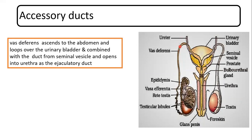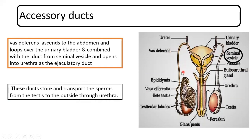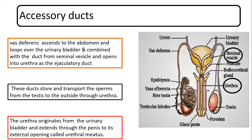The vas deferens reaches up to the height of the abdomen and then bends at the height of the urinary bladder. A duct from the seminal vesicle mixes with the vas deferens, and this mixed duct directly opens into the urethra. This is how the sperms are stored and transported through the vas deferens into the seminal vesicle and then directly into the urethra, from where they exit the body. The urethra originates from the urinary bladder and travels throughout the penis, opening through the urethral meatus.